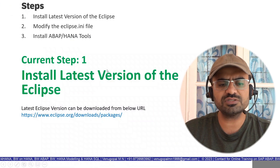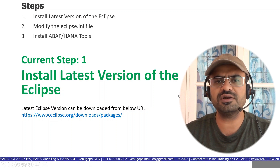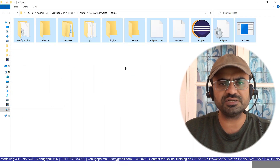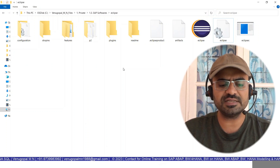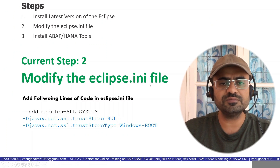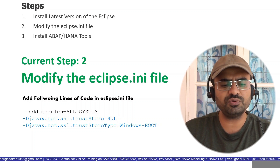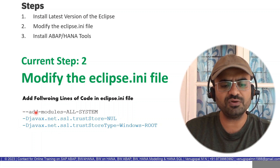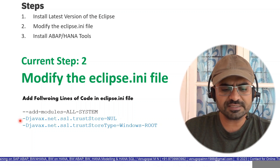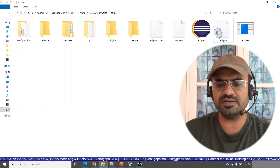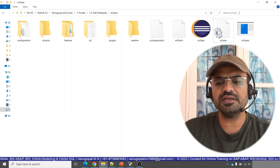Once you download Eclipse from the Eclipse website, the next step is — if you downloaded the zip version, you just have to unzip it. I have already downloaded the Eclipse version and unzipped it. Now the next step is to modify the eclipse.ini file. There will be a file called eclipse.ini in the folder where you extracted all the Eclipse tool-related files. You search for eclipse.ini — it is a configuration file.